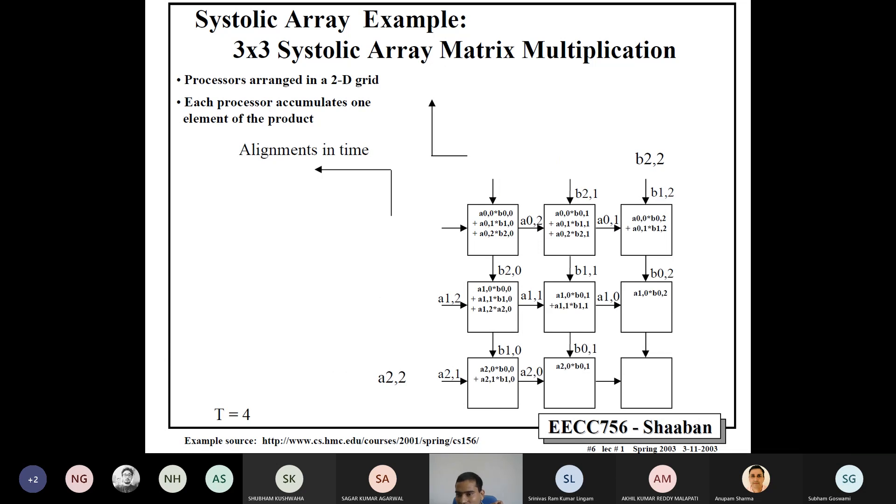Now, cycle number 4, some more have completed. This has completed its computation. This has also completed its computation. Cycle number 5, this has completed, this has completed, this has completed. Cycle number 6, this and this also complete. And cycle number 7, done. This has also completed. So, in this way, in just 7 cycles, we have done this 3 by 3 multiplication, which requires a total of 27 products, right? So, each PE is doing 3 multiplications. So, total 9 PEs, so we will do 27 multiplications. We have done them in 7 cycles.